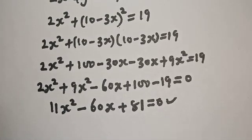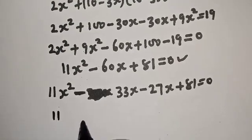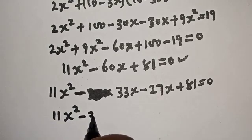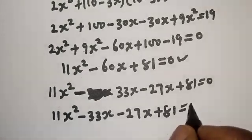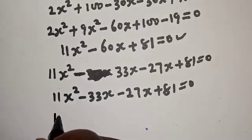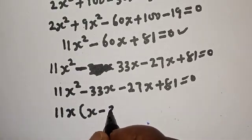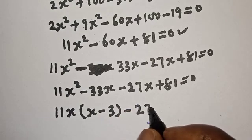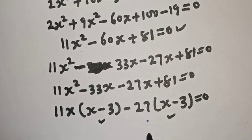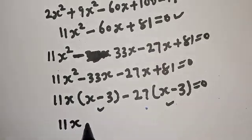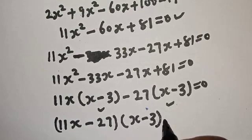This quadratic equation can be solved using the factorization method. Using factorization, we have 11x squared minus 33x minus 27x plus 81 equals 0. This gives 11x(x minus 3) minus 27(x minus 3) equals 0, so (x minus 3) is a common factor.